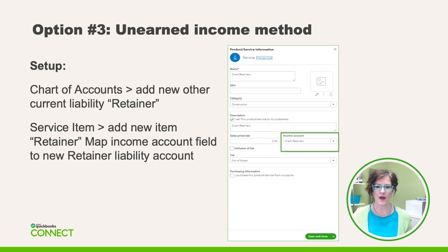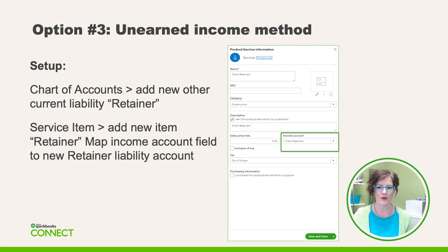A picture is worth a thousand words. Here is an example of setting up a product or service — we'll give it the name Retainer. In the income account drop-down, we create a new liability account called Client Retainers. The trick is to make sure you choose the tax code called Out of Scope, because when we take a retainer upfront, that is considered unearned or deferred revenue, so we don't want it landing on our sales tax returns just yet.